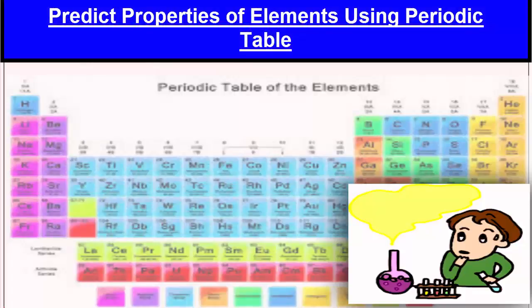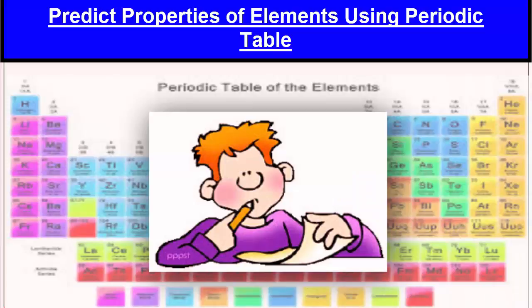How will we predict the properties of an element by using the periodic table? Friends, if we know the position of elements in the periodic table, then we can predict many of its properties even without knowing its name. This is because the position of elements in the periodic table is according to their electronic configuration and atomic number.